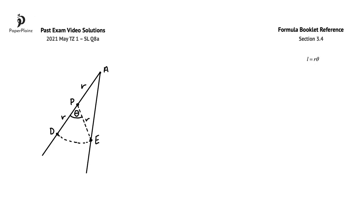In question part A, we have to write down an expression for R in terms of theta. Arc length DE is 28 meters long. To answer this question, we'll use the length of an arc formula from section 3.4 of the formula booklet. Substituting, we can write that 28 is equal to R times theta, which means that R is 28 over theta.